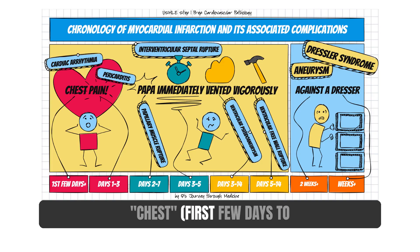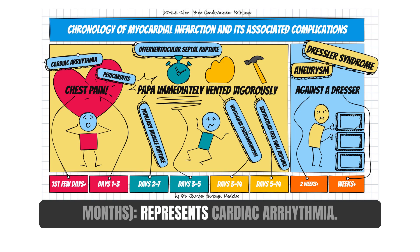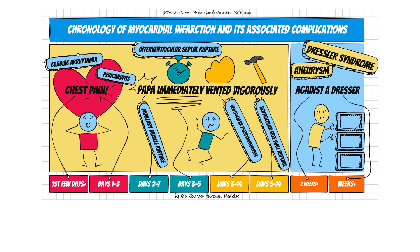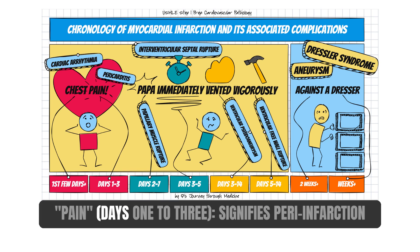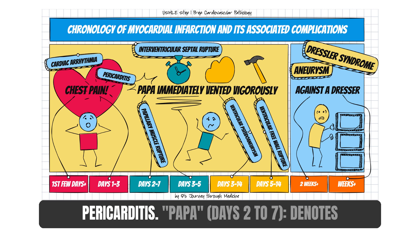Chest — first few days to months — represents cardiac arrhythmia. Pain — days 1 to 3 — signifies peri-infarction pericarditis.